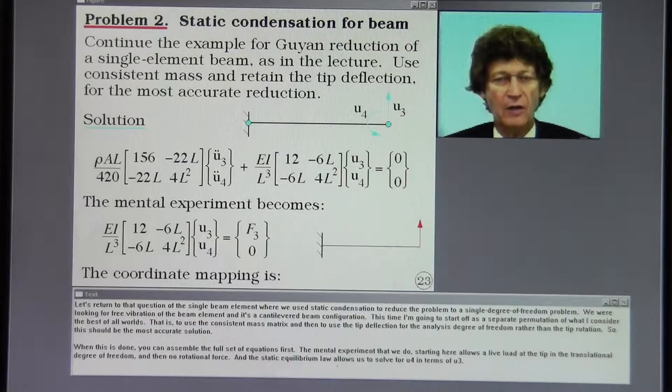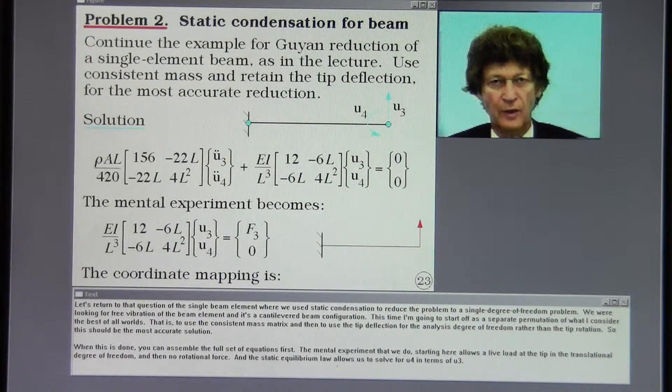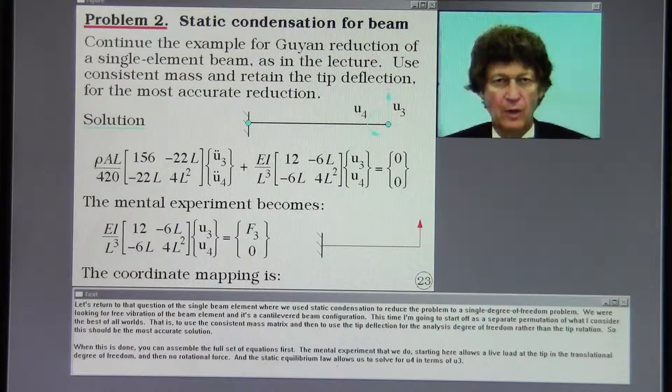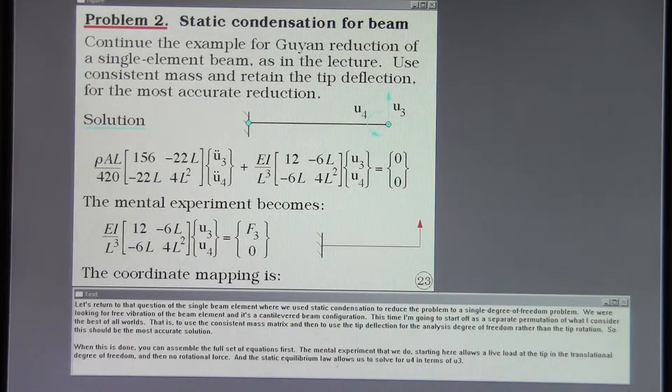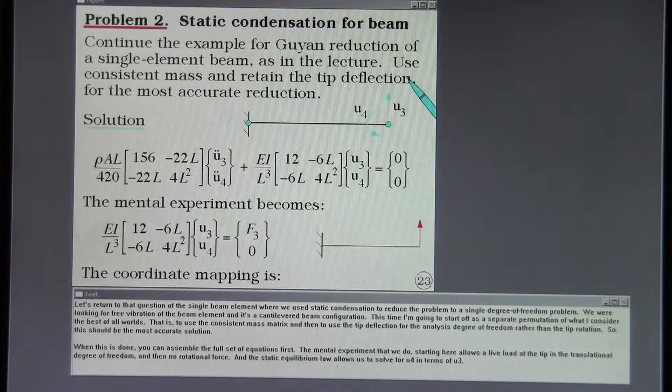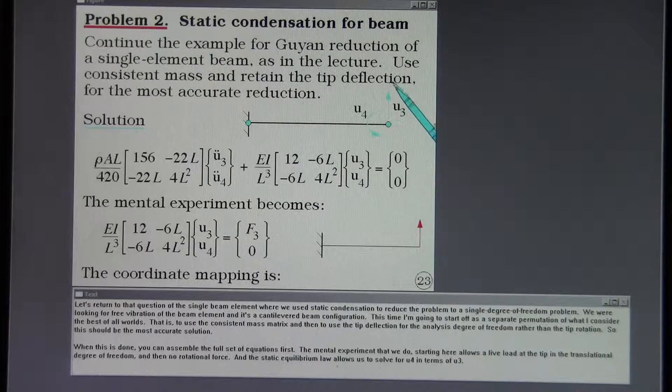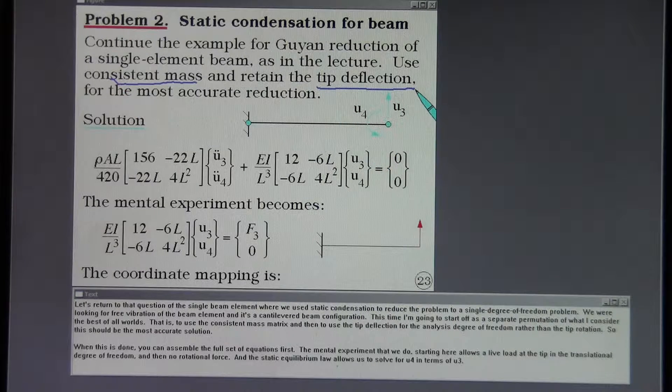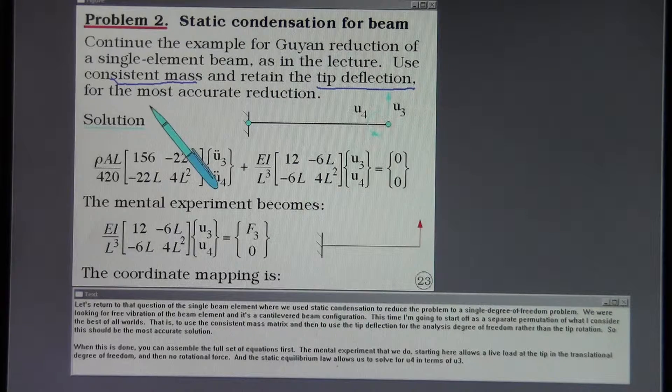Let's return to that question of the single beam element where we used static condensation to reduce the problem to a single degree of freedom problem. We were looking for free vibration of the beam element, and it's a cantilevered beam configuration. This time I'm going to start off as a separate permutation of what I consider the best of all worlds. That is to use the consistent mass matrix and then to use the tip deflection for the analysis degree of freedom rather than the tip rotation. So this should be the most accurate solution.